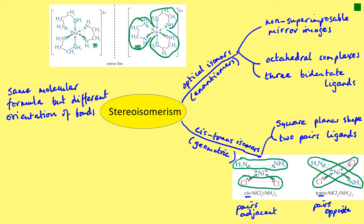If you replaced the nickel in the cis isomer with platinum, then you would have cisplatin, which is a chemotherapy drug. What it does is stop tumor cells reproducing, so it's active in the treatment of lung cancer, for example.